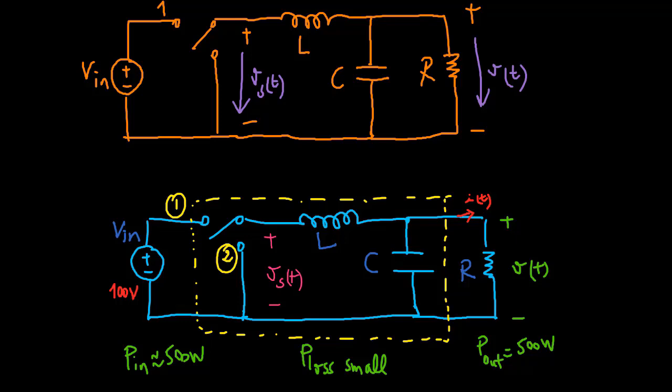Hence, efficiencies approaching 100% can be obtained. So to the extent that the components are ideal, we can realize our objective of changing DC voltage levels using a lossless network.